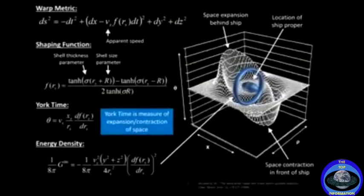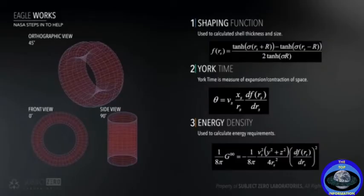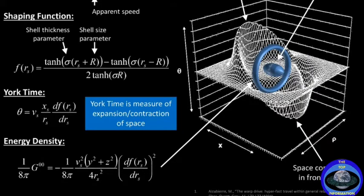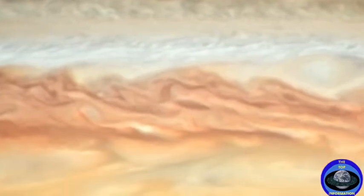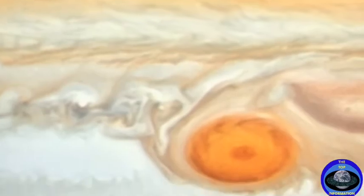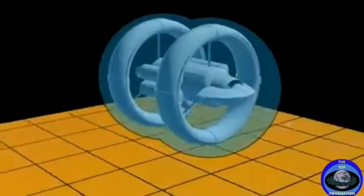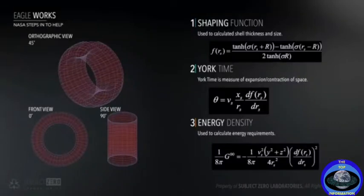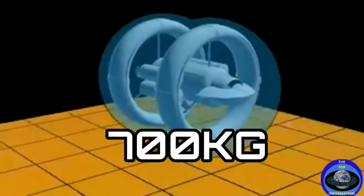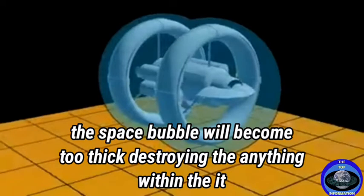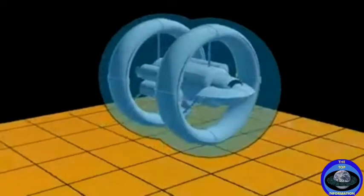What he proposed was that to decrease the mass necessary to make this work, you could increase the oscillation of the torus. With a mass equivalent of Jupiter, you would have a warp bubble configuration that would enable a ship to be located inside the bubble without harm. As you increase the oscillation, you diminish the total exotic matter requirement to a point where all you need is 700 kilograms of exotic matter. But the space bubble would then be so thick that it would destroy anything within it, including the spacecraft.